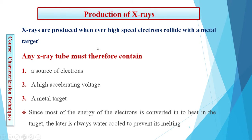X-rays are produced whenever high-speed electrons collide with the metal target. When the high-speed electron collides on the surface of the target, the target atoms will excite or de-excite. Due to the excitation and de-excitation of the electron inside the target material, the X-rays will be produced.